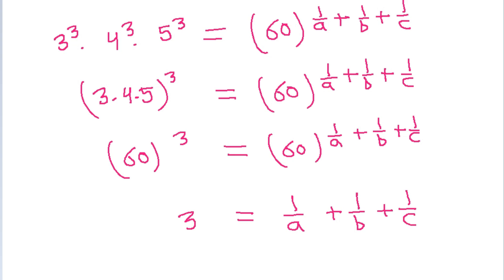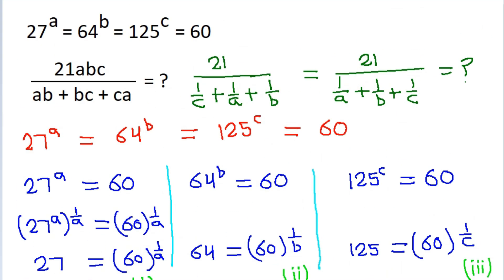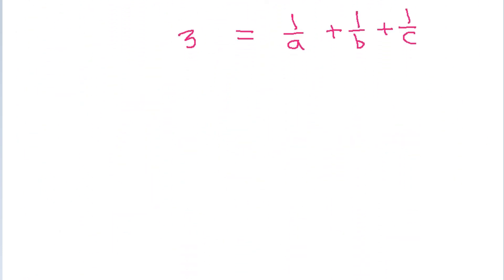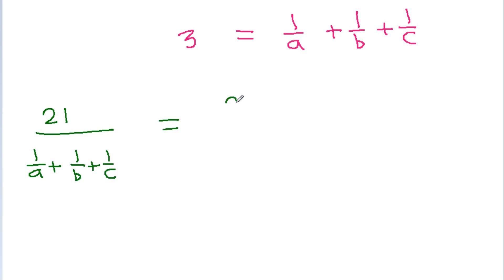Equating the powers we get 3 is equal to 1/a plus 1/b plus 1/c. Now we have to find the value of 21 divided by (1/a plus 1/b plus 1/c), which equals 21 divided by 3, and 21 divided by 3 will be 7. So the required value is 7.